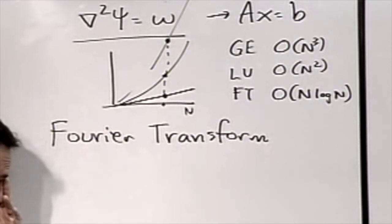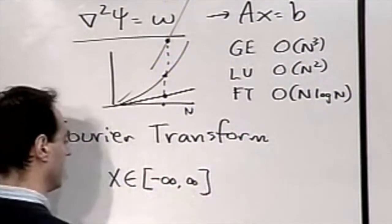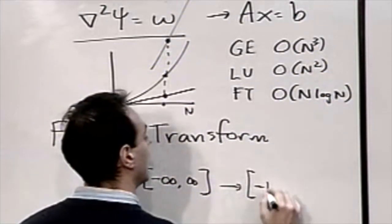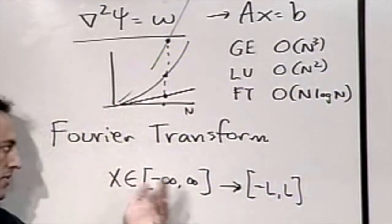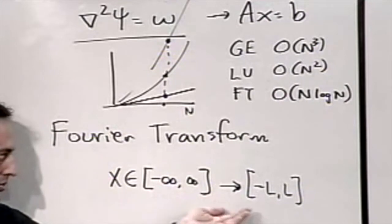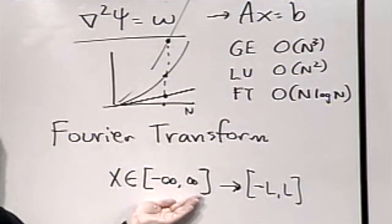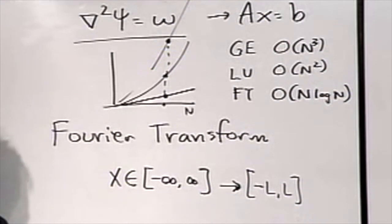The Fourier transform is typically defined on the interval from negative infinity to infinity, but for practical purposes we define things on a finite interval, negative L to L. On the infinite domain, boundary conditions are imposed at infinity. On the finite domain with Fourier transforms, we impose periodic boundary conditions.